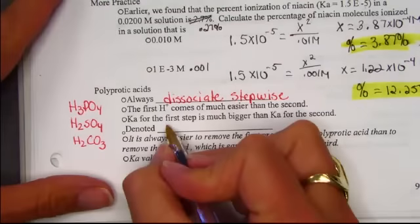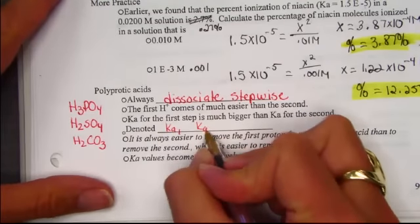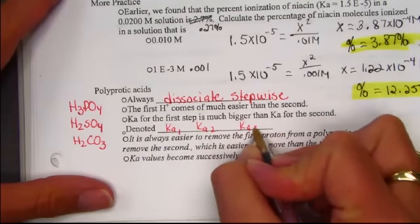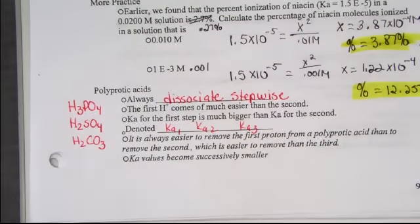If we denote those as Ka1, Ka2, and if there is a Ka3, nothing larger than a triprotic acid. Looking at the magnitude of our values, Ka1 indicates, because it's much larger, it's easier to remove the first proton from a polyprotic acid than to remove the second, and the second is easier to remove than the third. The Ka values become successively smaller.